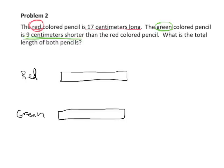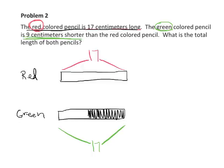And then we're going to go back and read the question again and then edit our bars to accommodate the problem. So let's go back. And it says the red colored pencil is 17 centimeters long. So that means we can label this as 17 centimeters. And then it says the green colored pencil is nine centimeters shorter than the red colored pencil. So that means the green, it's not 17 because we have to cut off nine centimeters. And I'm just going to estimate what nine might look like. And there is our nine centimeters.